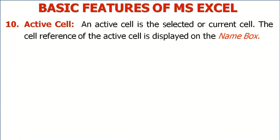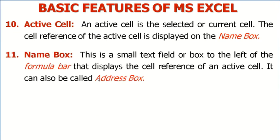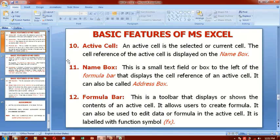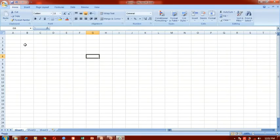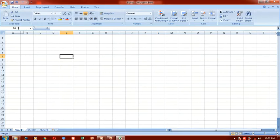Active cell is the selected cell or the current cell. The cell reference of the active cell is displayed on the name box. Name box is a small text field or box to the left of the formula bar that displays the cell reference of an active cell — it can also be called the address box. So this is E6 and it is displayed on the name box.